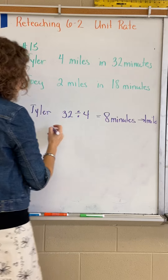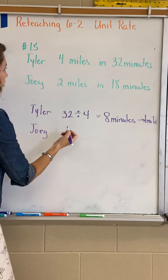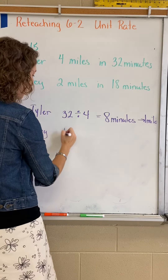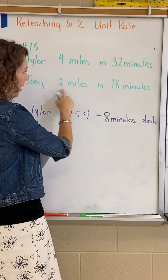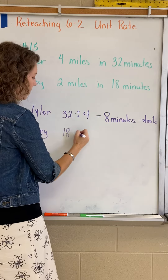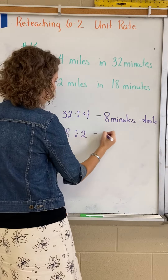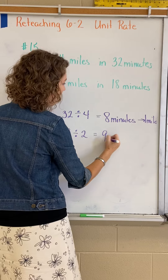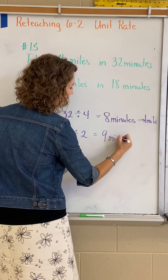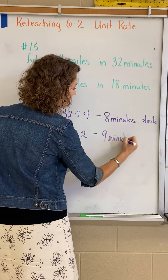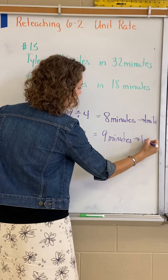Now let's look at Joey. Joey in 18 minutes can go two miles. So I'm gonna divide 18 by two, and that will give me nine. Nine minutes per one mile.